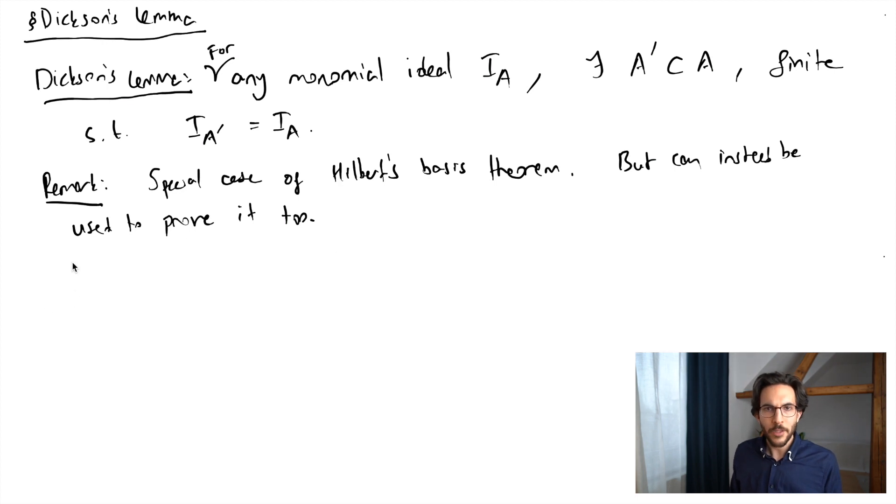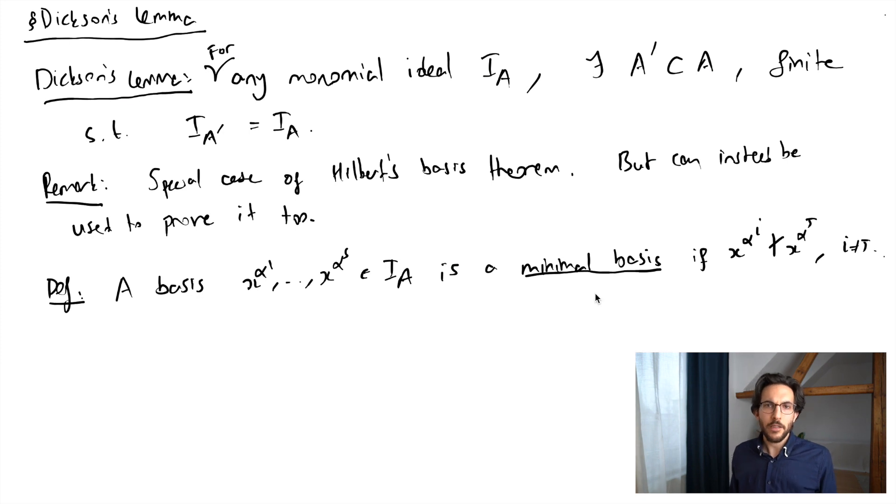Before we start the proof, let's make a definition that follows from Dixon's lemma. We will call a basis of a monomial ideal a minimal basis if none of the monomials in your basis divide one another. It's a simple exercise to show that every monomial ideal admits a minimal basis, and a minimal basis is unique.